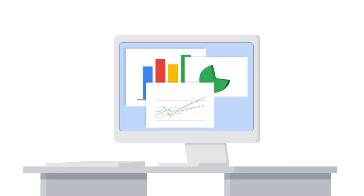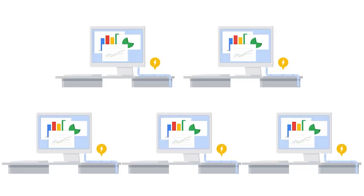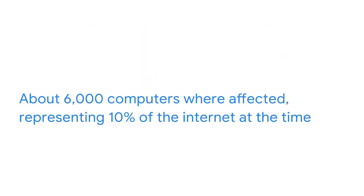Another influential computer attack was the Morris worm. In 1988, Robert Morris developed a program to assess the size of the internet. The program crawled the web and installed itself onto other computers to tally the number of computers connected to the internet. The program, however, failed to keep track of the computers it had already compromised and continued to reinstall itself until the computers ran out of memory and crashed. About 6,000 computers were affected, representing 10% of the internet at the time. This attack cost millions of dollars in damages due to business disruptions and the efforts required to remove the worm.